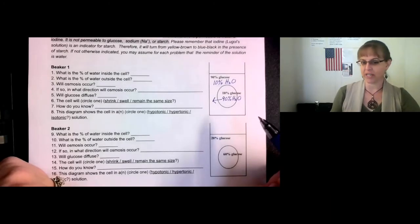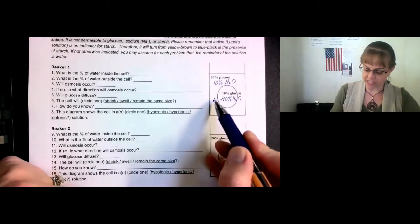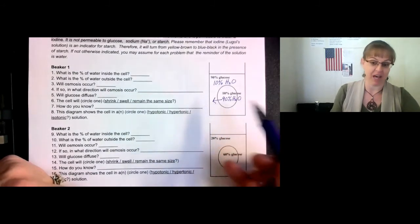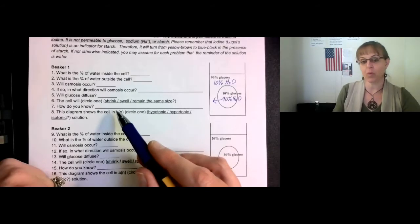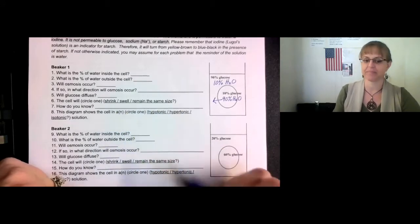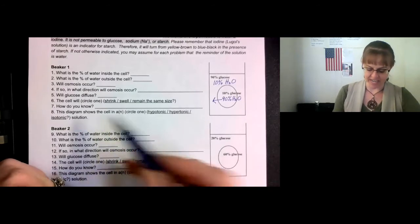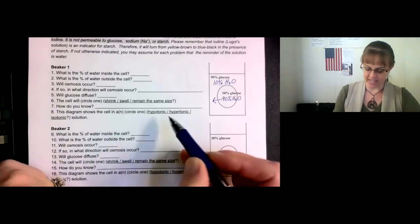The cell will shrink, swell, or remain the same size. Well, if water is going out of the cell, obviously the cell will shrink. How do you know? Water is moving outside the cell.